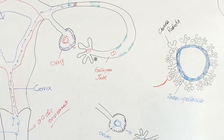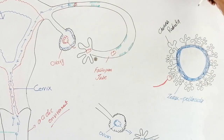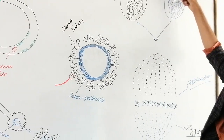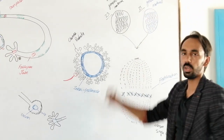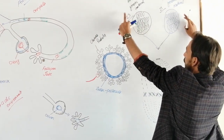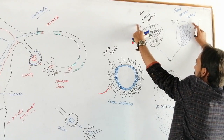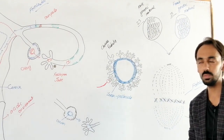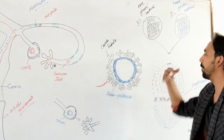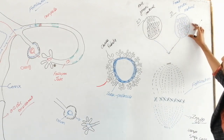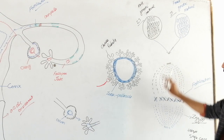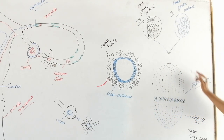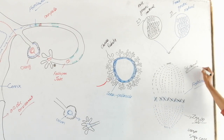Another function of the zona pellucida is it prevents polyspermy. As you know, the male genetic material has 23 chromosomes. And the female genetic material also has 23 chromosomes. So both the female and male genetic materials will meet after fertilization, and the genetic material of the male and female will combine — giving 46 chromosomes in total.